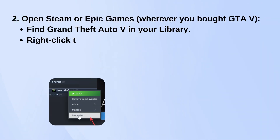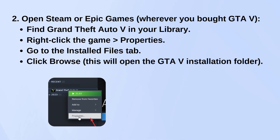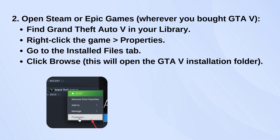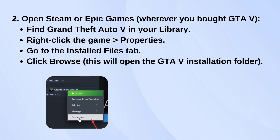Next, open the game launcher you used to install GTA 5, either Steam or Epic Games. Find GTA 5 in your library, right-click it, then go to Properties.